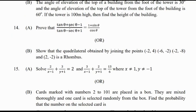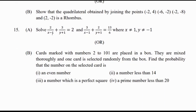Question 14 is from trigonometry: prove that (tan θ + sec θ − 1) / (tan θ − sec θ + 1) = (1 + sin θ) / cos θ. Or show that the quadrilateral formed by joining the points (2, −2), (4, −6), (−2, −2), and (−8, 2) is a rhombus. Question 15 A: Solve the system — 2/(x−1) + 3/(y+1) = 2 and 3/(x−1) + 2/(y+1) = 13/6, finding the values of x and y. Question 15 B is a question from probability.